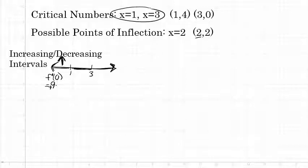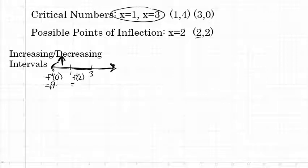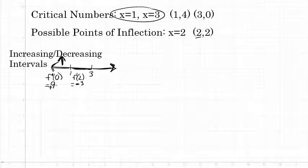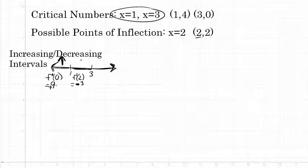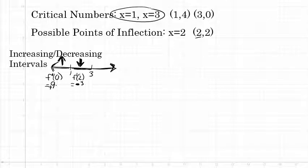Between 1 and 3, I'll choose 2. Substituting 2 into the first derivative gives a value of negative 3. Since that is negative, it tells me that in the interval from 1 to 3 the function is decreasing — the function will be going down from x = 1 to x = 3 when I draw this graph.